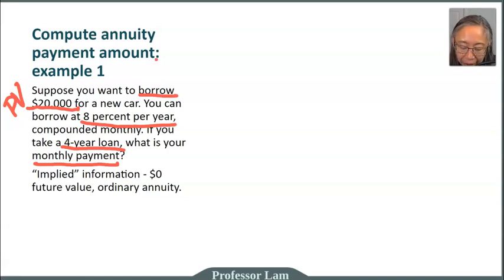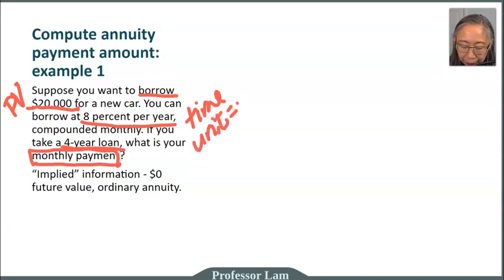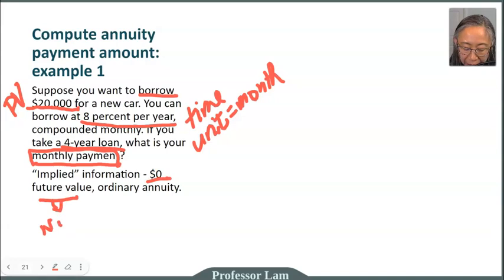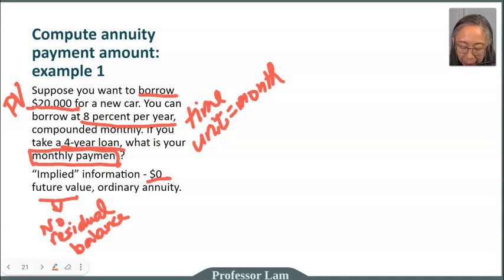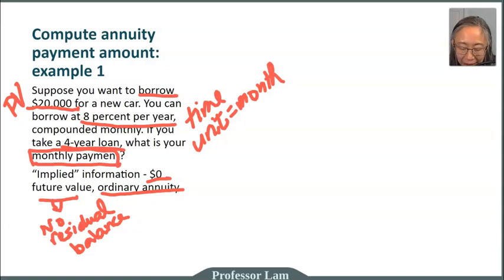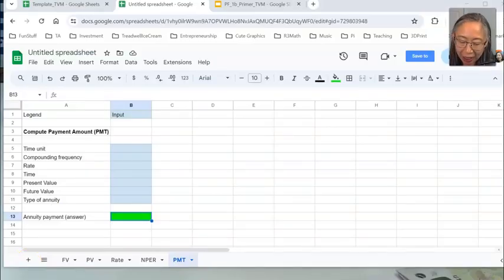The other implied information: the future value is $0, because we assume there is no residual balance — you will fully pay off the loan in four years. Most consumer loans, car loans, and home mortgages are ordinary annuity. So let's go ahead and create your own model on computing annuities. Open a new tab in Google Sheets, enter the model structure, and when you come back we'll create the model together.